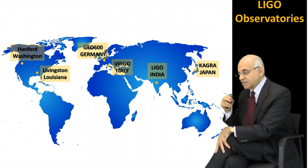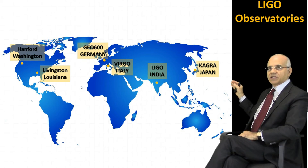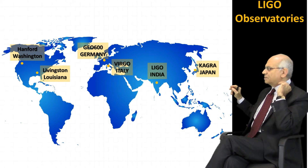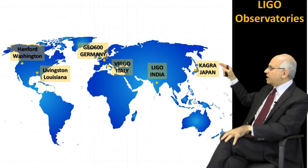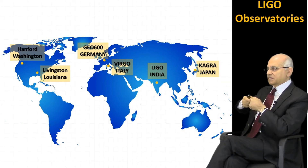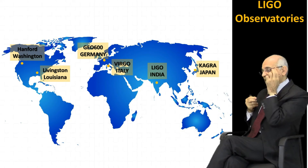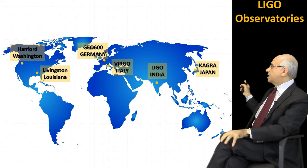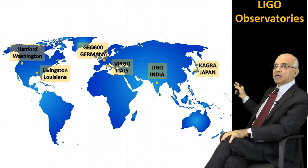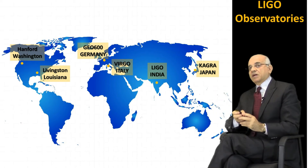There was also cooperation from the Virgo LIGO installation in Pisa, Italy. And there are other LIGO installations around the world — one in Germany called GEO 600, because it has 600 meters instead of 4,000 meters; one in India called LIGO India; and one in Japan. So there are about seven LIGO installations around the world.